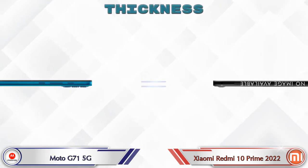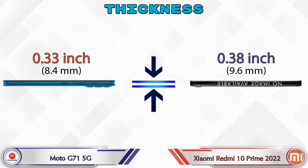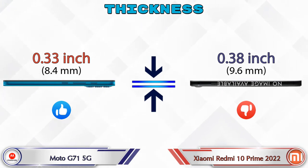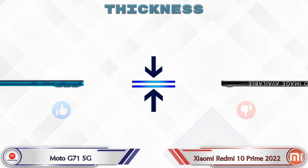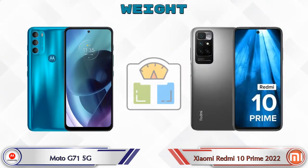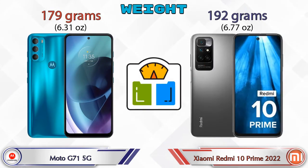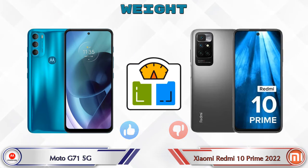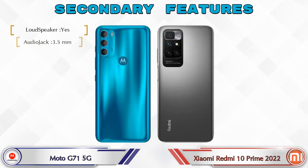For thickness, the G71 5G is 0.33 inches and the 10 Prime 2022 is 0.38 inches, which is bigger than the G71 5G. For weight, the G71 5G is 179 grams and the 10 Prime 2022 is 192 grams, which is heavier than the G71 5G.